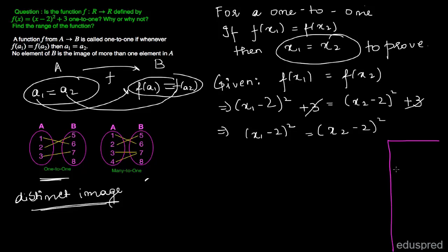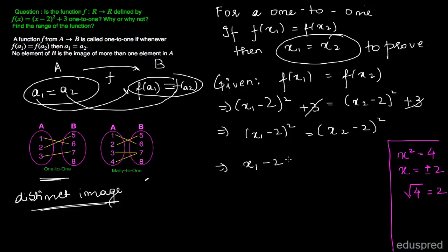Note that if you have x squared equal to 4, then x would be plus or minus 2. But if you have the sole value of root 4, then this would equal only plus 2. The difference is that the first is in equation form whereas the second is only a number. Using the same logic here, since it is in equation form, we write x1 minus 2 equal to plus or minus (x2 minus 2).